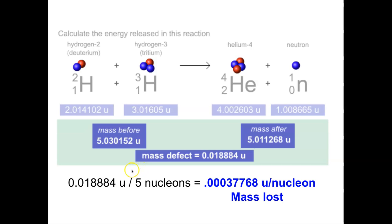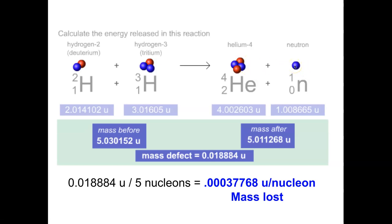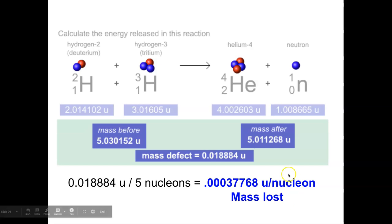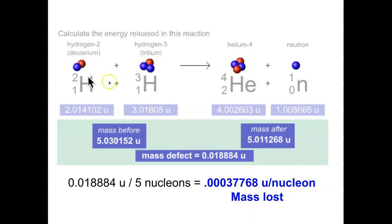Dividing the missing mass by five nucleons gives a mass loss per nucleon of about 0.000377 atomic mass units — a tiny fraction of a proton or neutron's mass. This represents the energy that was released. When energy is lost from the system, helium becomes more stable, with a greater binding energy — its nucleus is held tighter than the two individual reactants were separately.